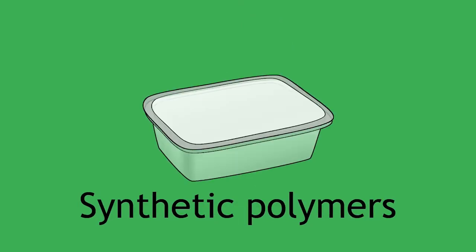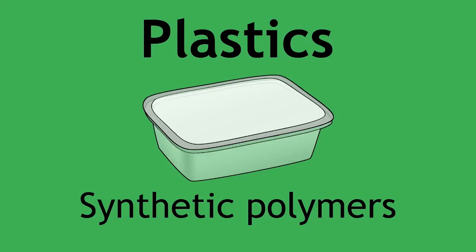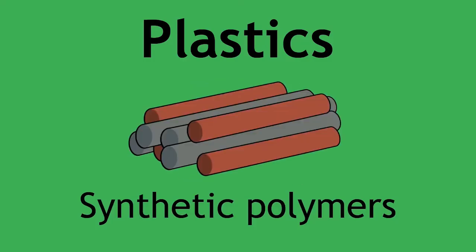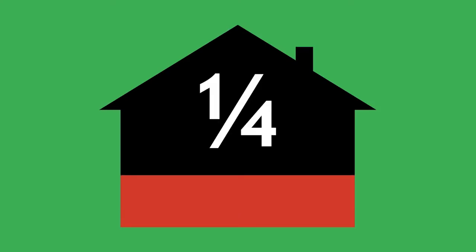The common name for synthetically made polymers is plastics, which are used very frequently in our day-to-day lives from simple packaging to complex structural building materials. However, the increased use of plastics in our homes leads to nearly one quarter of all the solid waste being plastic.